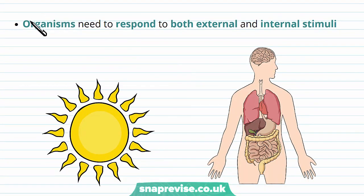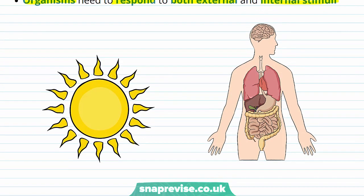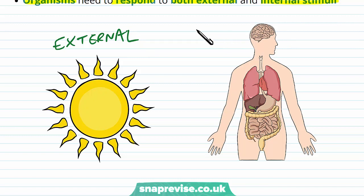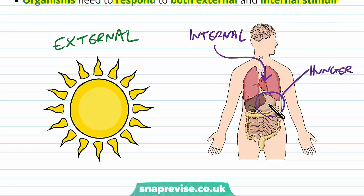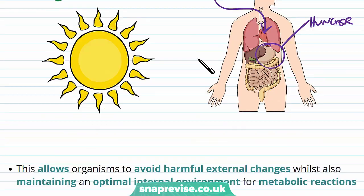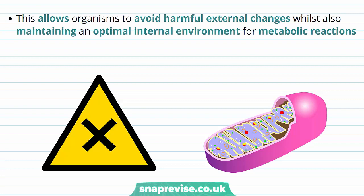Any organism needs to respond to both external and internal stimuli. External stimuli refer to anything outside of the organism's body, for example level of sunlight or temperature. Internal stimuli come from inside the body — for example the sensation of hunger, where the stimulus is a lack of food, leading to a response of eating to get rid of that hunger. By responding to both external and internal stimuli, organisms can avoid harmful external changes and maintain an optimal internal environment for all metabolic reactions.